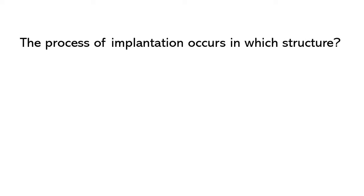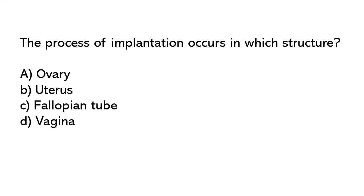The process of implantation occurs in which structure? Options: A) Ovary, B) Uterus, C) Fallopian tube, D) Vagina. So the correct answer is option B. Uterus.